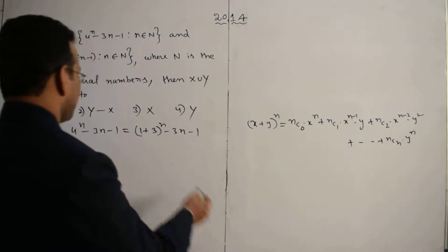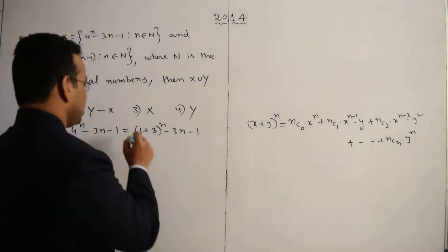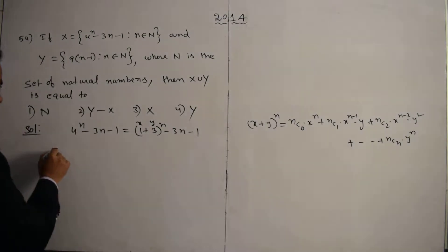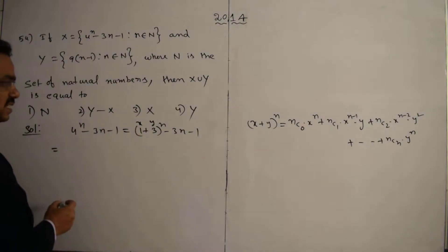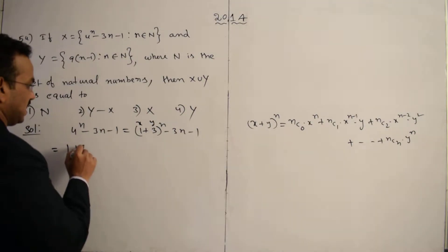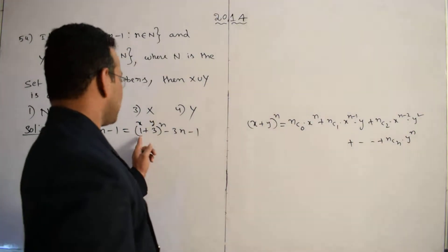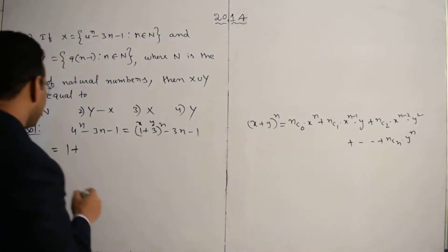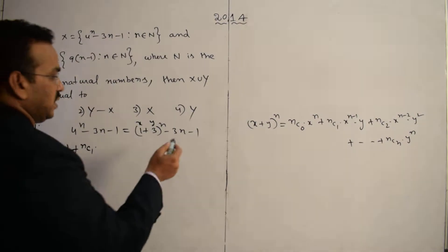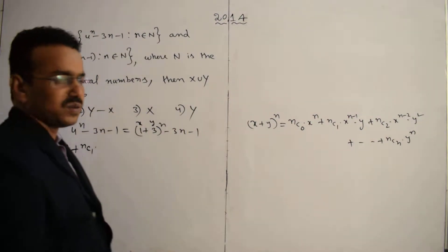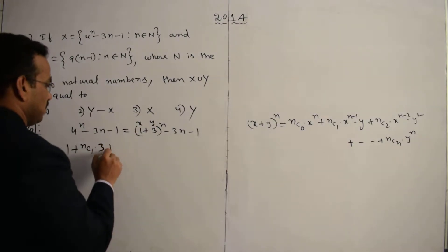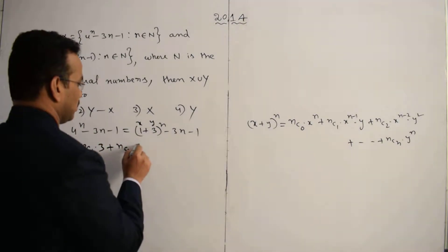Now let's apply the binomial expansion for (1+3)^n. Here x equals 1 and y equals 3. So the expansion gives: nC0, which is 1, plus nC1 times 3, plus nC2 times 3^2, since x equals 1 every time so we only write the y terms.